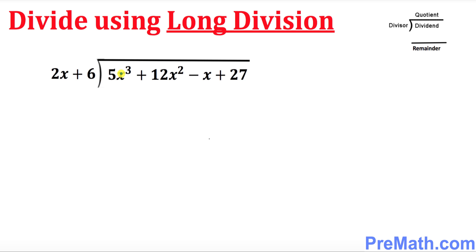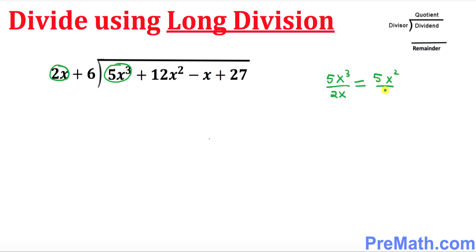Let's get started with our long division process. Look at the leading term inside the dividend, which is 5x power 3. Write down 5x power 3. Now look at the leading term outside, which is our divisor, 2x. If you simplify, you're going to get 5x squared over 2.